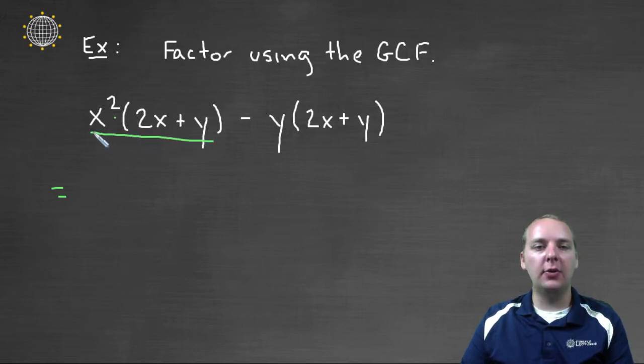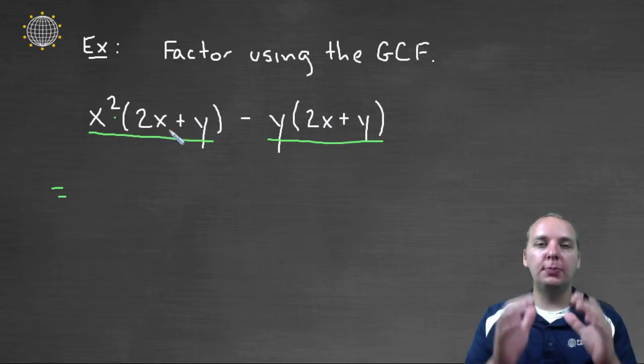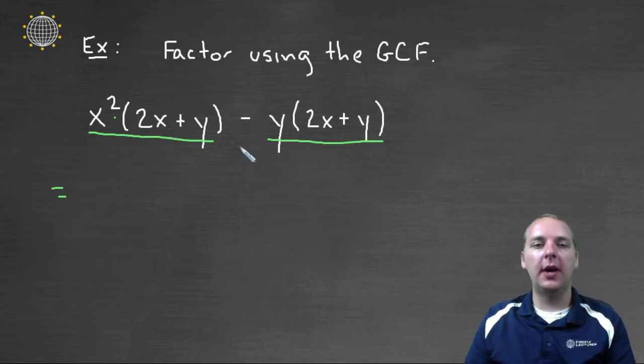So I've got my eye on this giant term and this giant term, and I'm looking for common factors. The second term has a y as a factor, but the first term does not. The only thing I see in common between both of these guys is actually they both have a 2x plus y as one of their factors. So we can actually factor that out, 2x plus y.